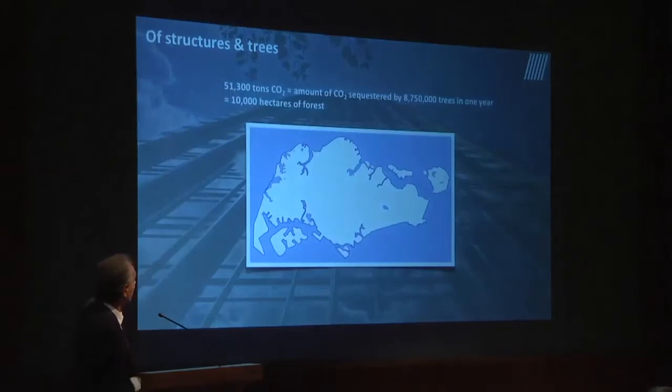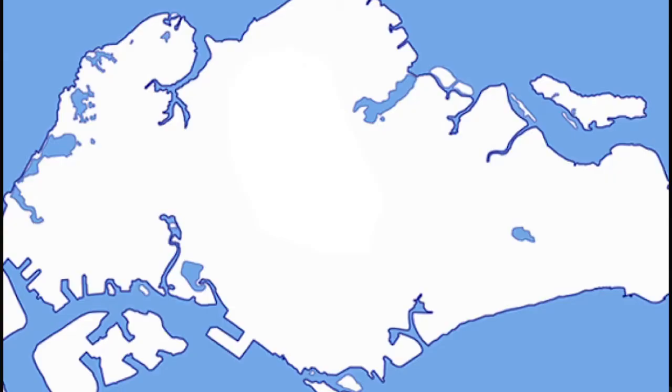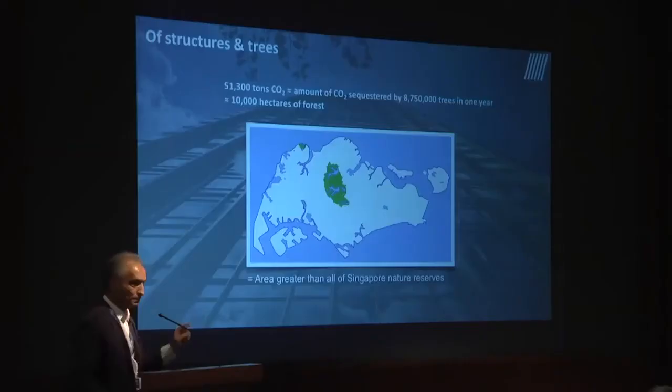And what does that mean? 51,300 tons of CO2 is the amount sequestered by 8,750,000 trees in one year. That's an area much bigger than the entire nature reserve of Singapore — and that's just one building, about 40 stories.